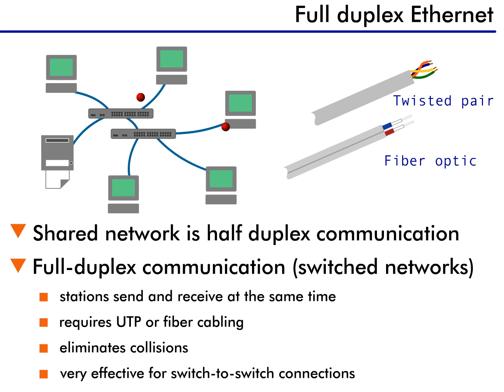As I mentioned, a shared networking environment only allows one station to communicate at a time. Furthermore, a station can only transmit or receive data — it can't transmit and receive at the same time. In other words, communication on a shared network is half-duplex.